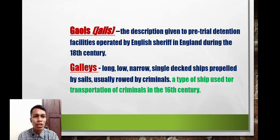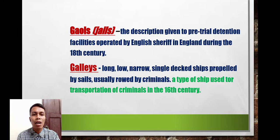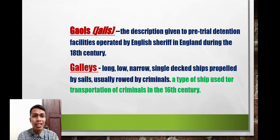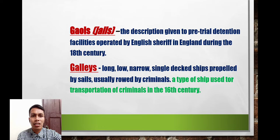These galleys were boats — single-deck ships propelled by sails, meaning they were rowed by the criminals themselves. They also used sails when the wind was favorable. These vessels were used as a mode of transportation for criminals way back in the 16th century.